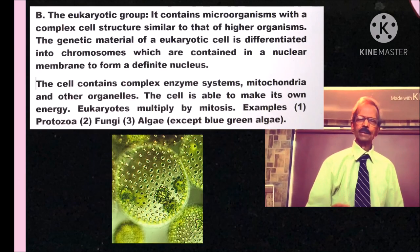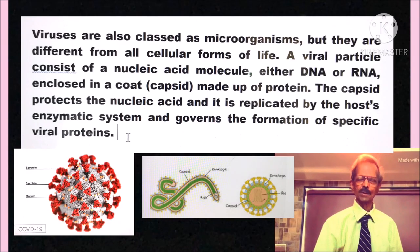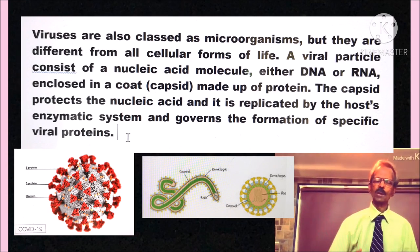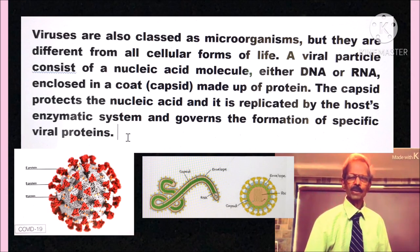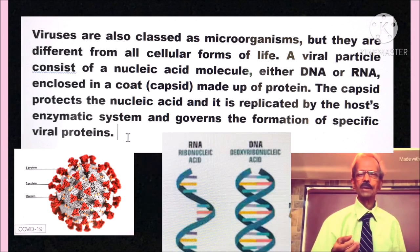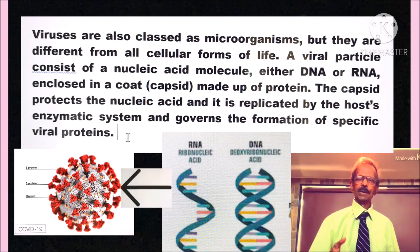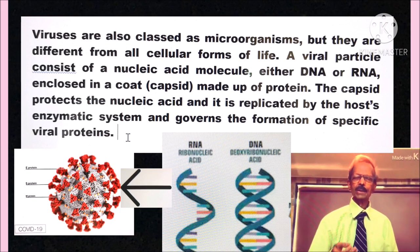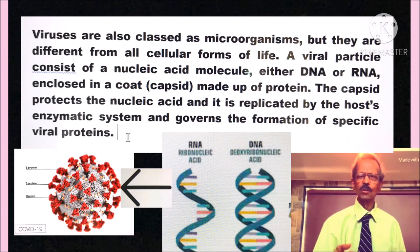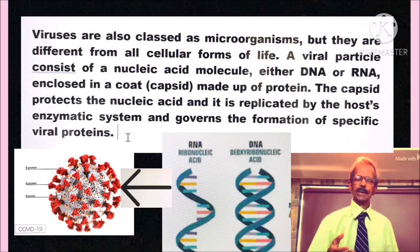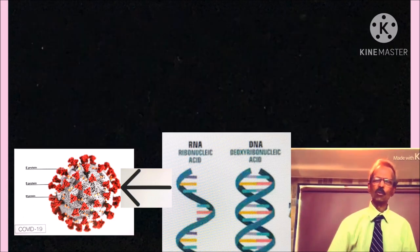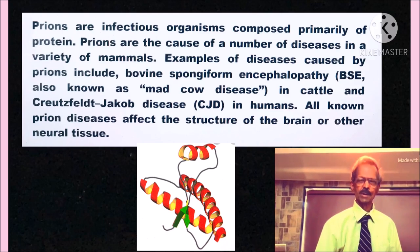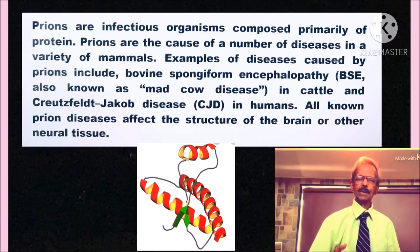Examples of eukaryotes are protozoa, fungi, and algae except blue-green algae. A very important thing to note is that viruses are also classed as microorganisms but they are different from all cellular forms of life. A viral particle consists of a nucleic acid molecule, either DNA or RNA, enclosed in a coat or capsid made up of protein. The capsid protects the nucleic acid and it is replicated by the host enzyme system and governs the formation of specific viral proteins.